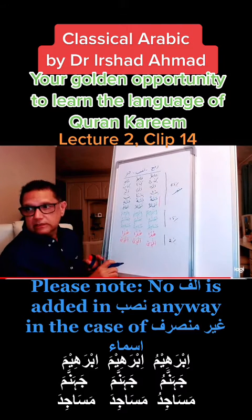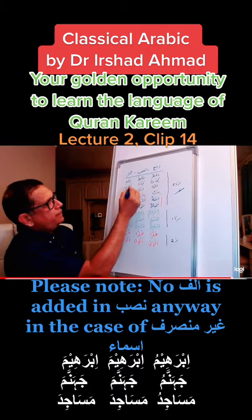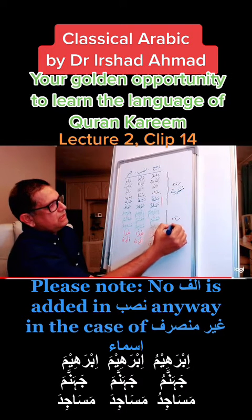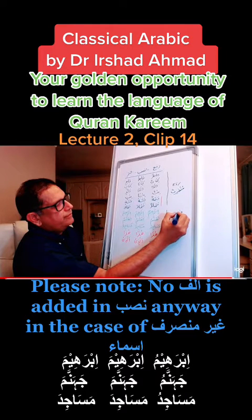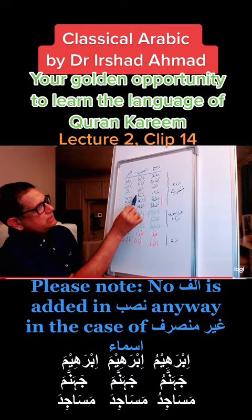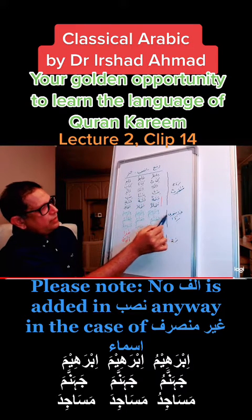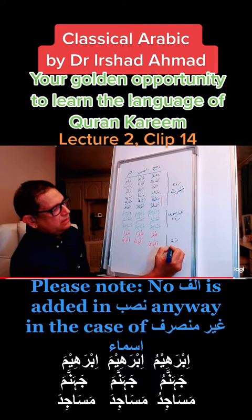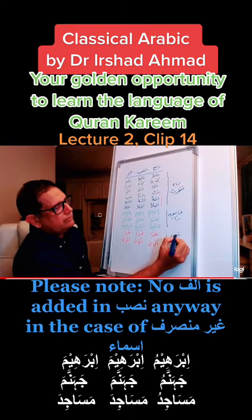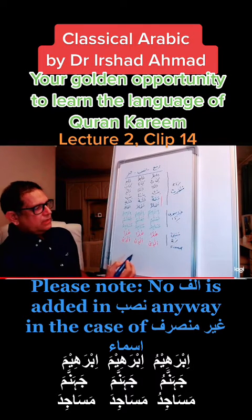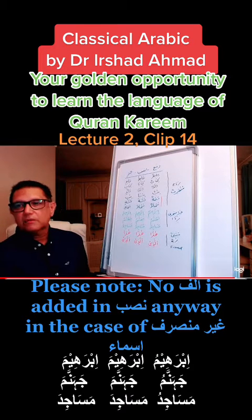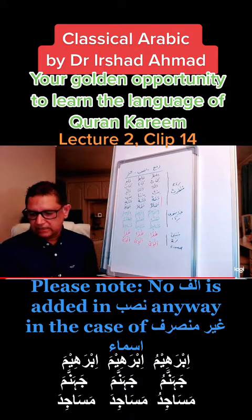This category is called Monsarif — that's a terminology we will be using — in which the change occurs all along. So: three forms is Monsarif, two forms is Gheru Monsarif, and nouns with one fixed form are called Mabni. So eighty-five percent are Monsarif, fifteen percent are Gheru Monsarif, and only two percent are Mabni — they do not change at all under any circumstances.